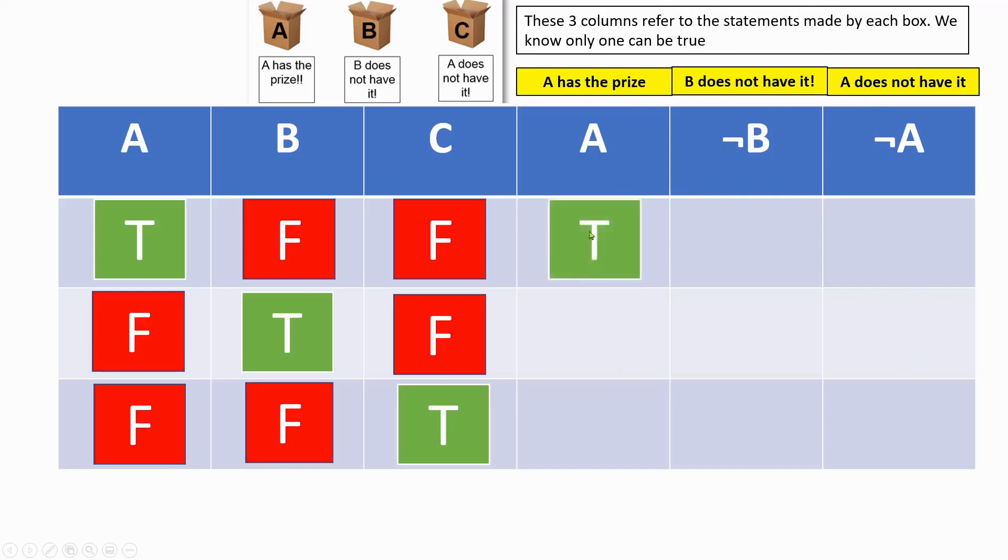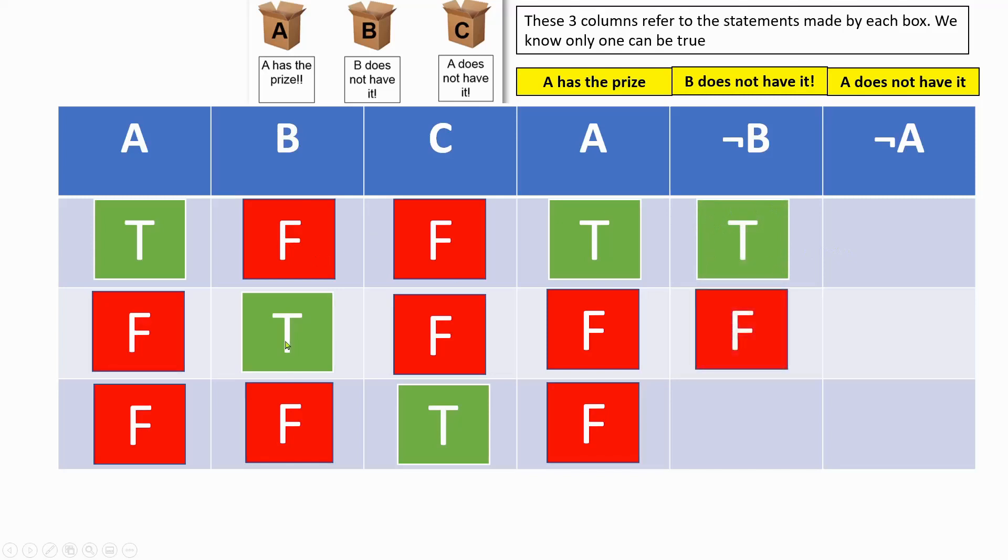So let's quickly fill these in and see what we get. Here we can see that A has the prize. In this case, that would be true. Let's fill in this column first. So A has the prize - we're just literally taking the value of A, which is F here, and I'm filling it in here, F. Now NOT B. So we look at the input B, which is here, and we see that it's F. So of course NOT B would be the opposite of F, which is true. NOT T would be F, and NOT F would be T. And we do exactly the same thing for A, which is saying A does not have it. We literally look at A, which is T, and this would be F. A is F, so that would be T.